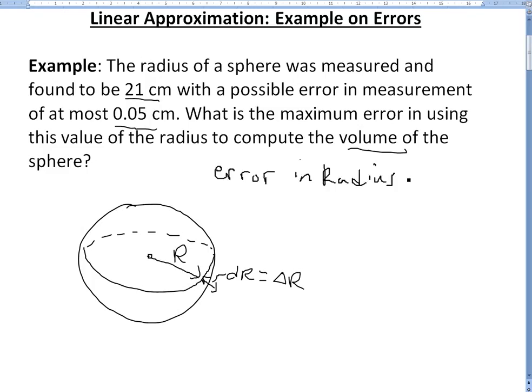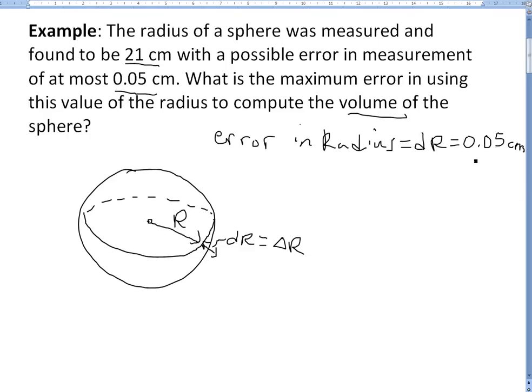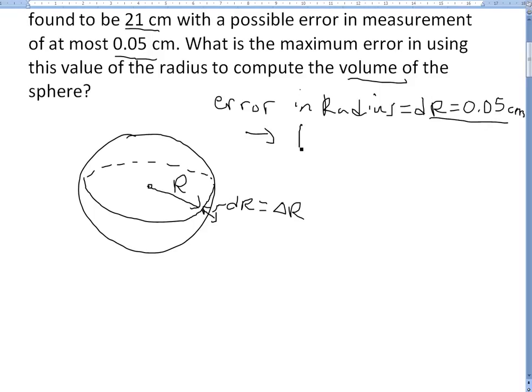So we know that the error in radius equals dR and this equals 0.05 centimeters. And we're asked to find the error in the volume of the sphere, the maximum error. So basically we're trying to find out dV.